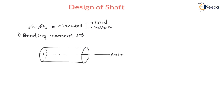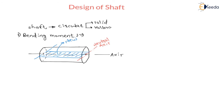In the cross section, there is a neutral axis. If we cover all the neutral axes for this element, then we will get the neutral layer — the layer hatched in blue color. This is called the neutral layer.